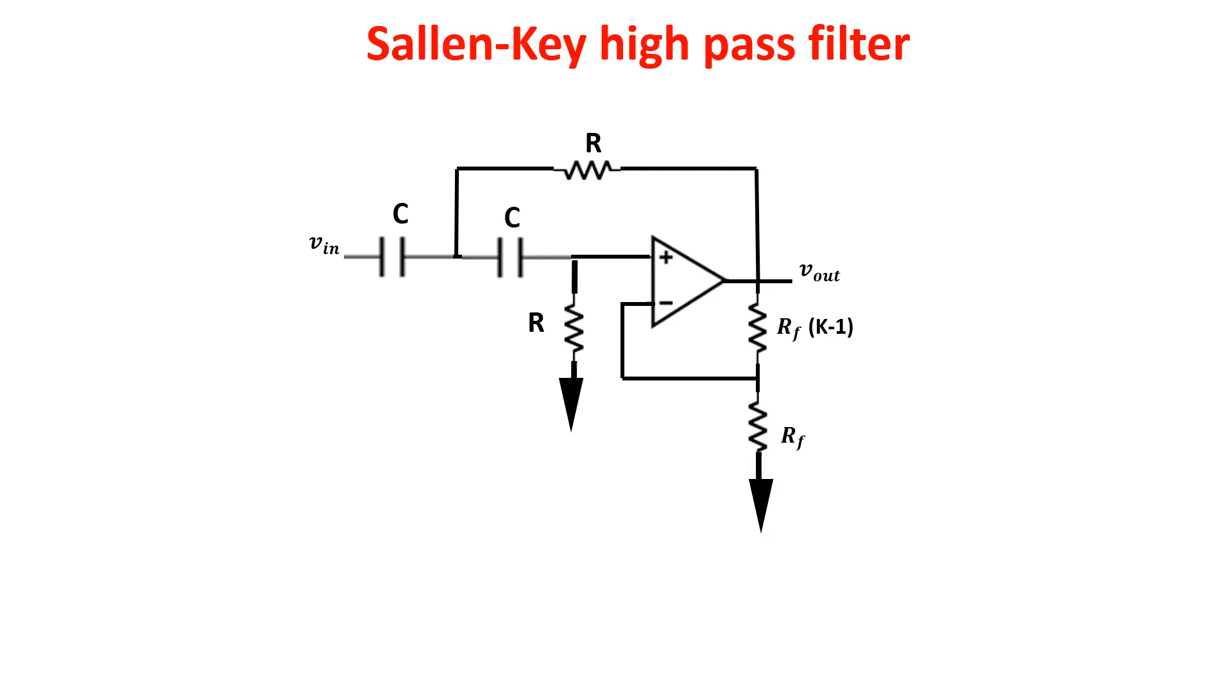Inverting the position of resistors and capacitors we have a Sallen-Key high-pass filter. You see the high frequency passes unchanged through the capacitors and the signal is amplified by a factor K, while the low frequency is blocked by the capacitor and shunted to ground by the resistors.